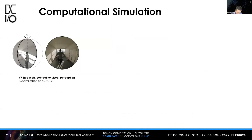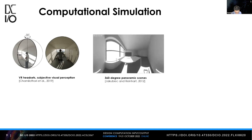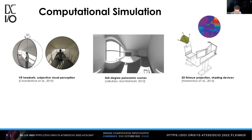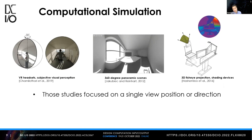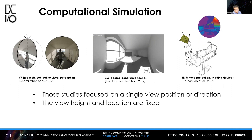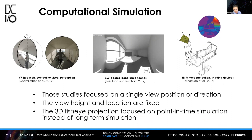Compared to field measurement, computational simulation provides more flexibility in time selection and camera settings. For example, one study used VR to study human visual perception, another simulated 360-degree panoramic scenes, and a third used fisheye images as the base to project pixels for designing shading devices. However, those studies focused on a single view position and direction — the view height and location are fixed, and the 3D fisheye projection focused on point-in-time simulation instead of long-term simulation.